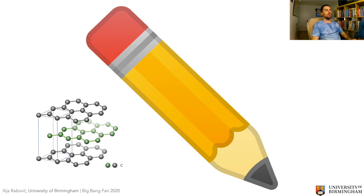The name graphite comes via German from the ancient Greek for writing. So much like autograph or biography are to do with writing, graphite is so-called because you can write with it.